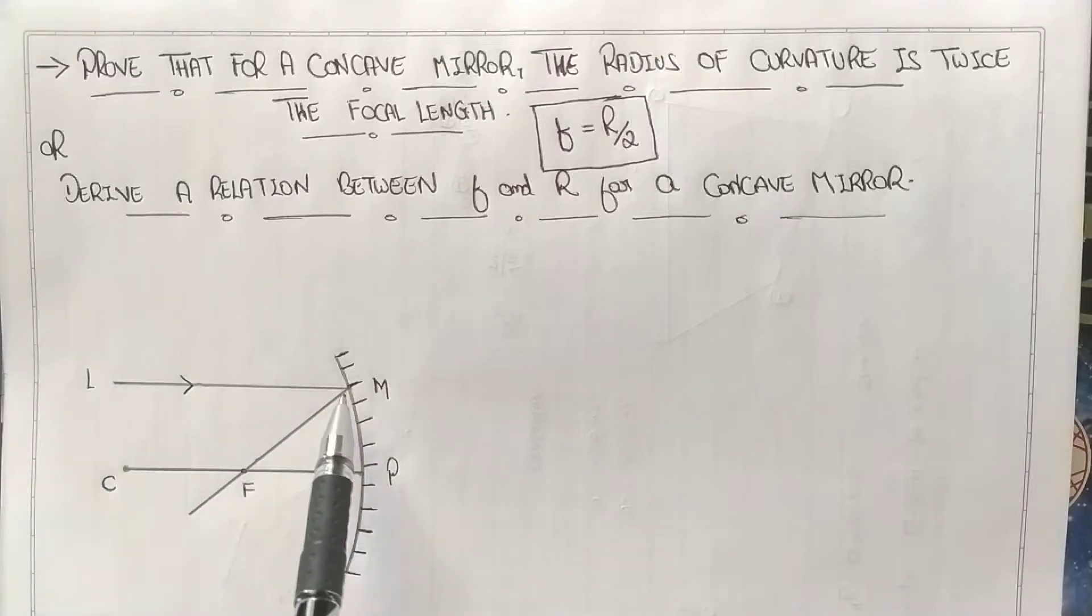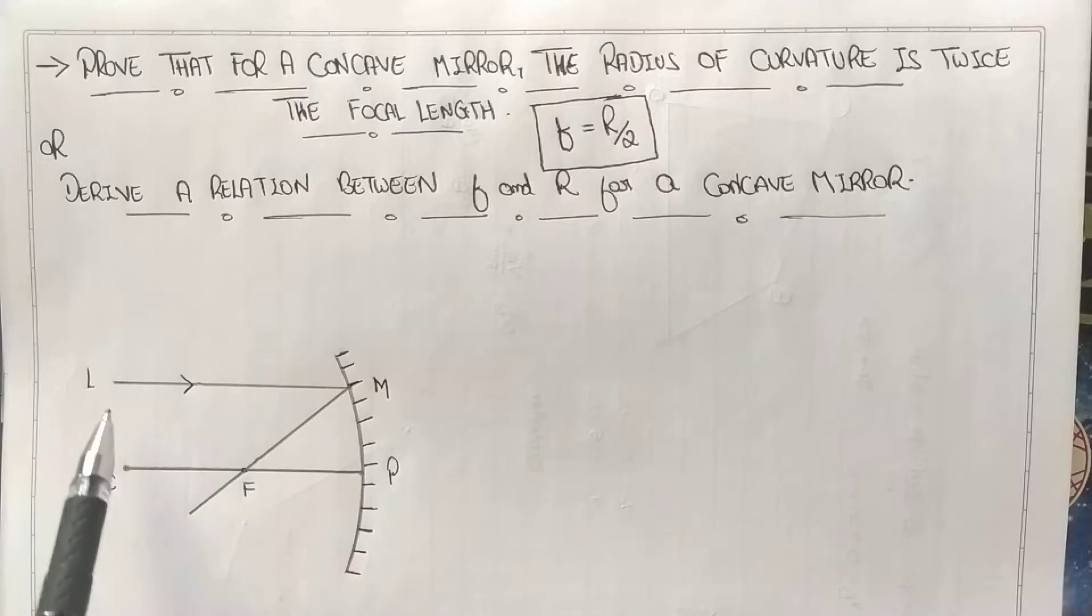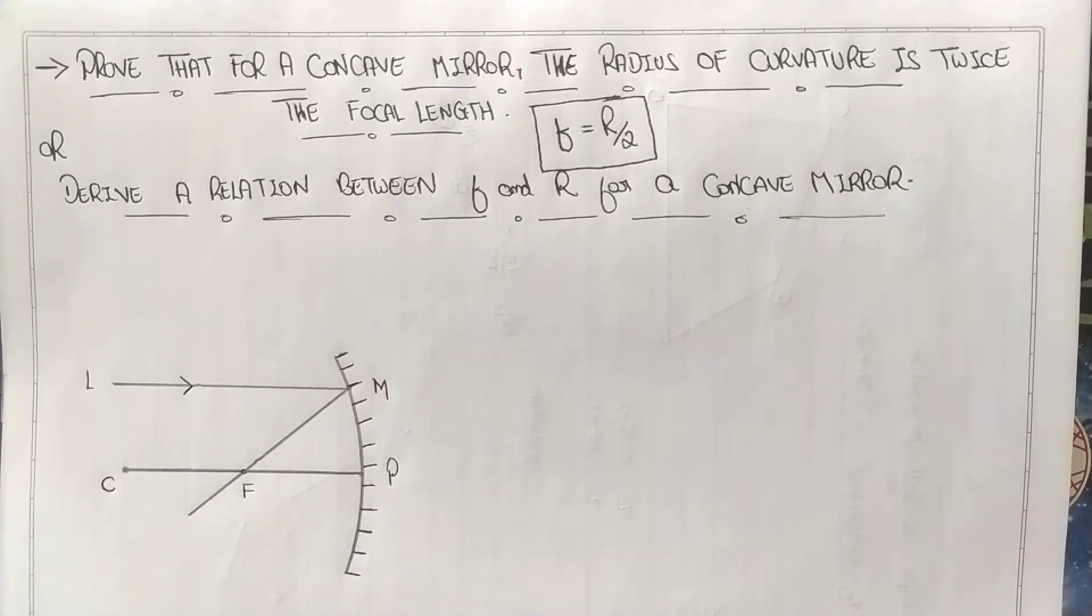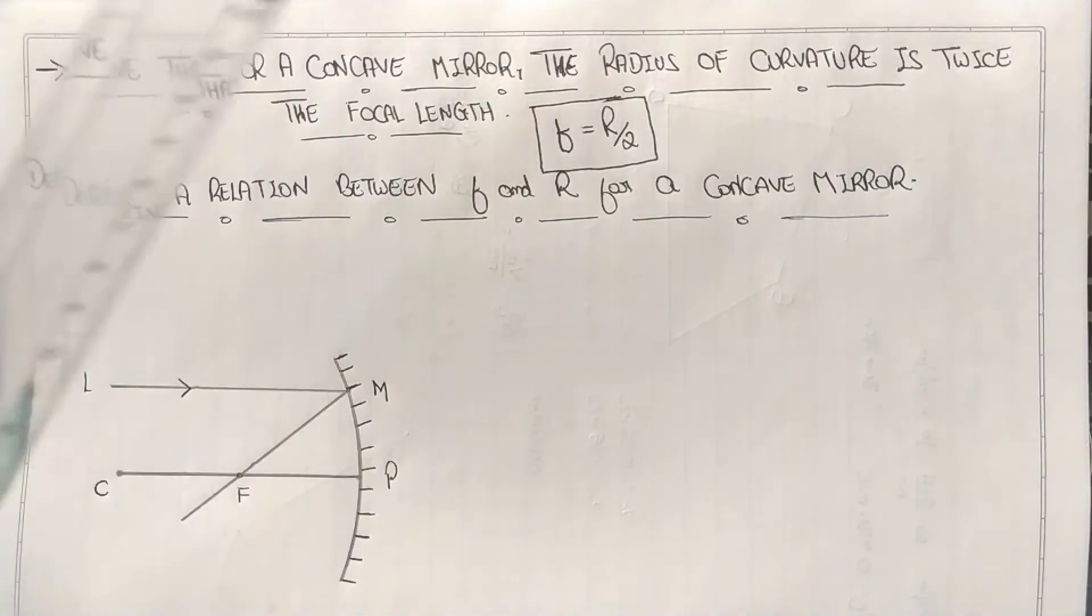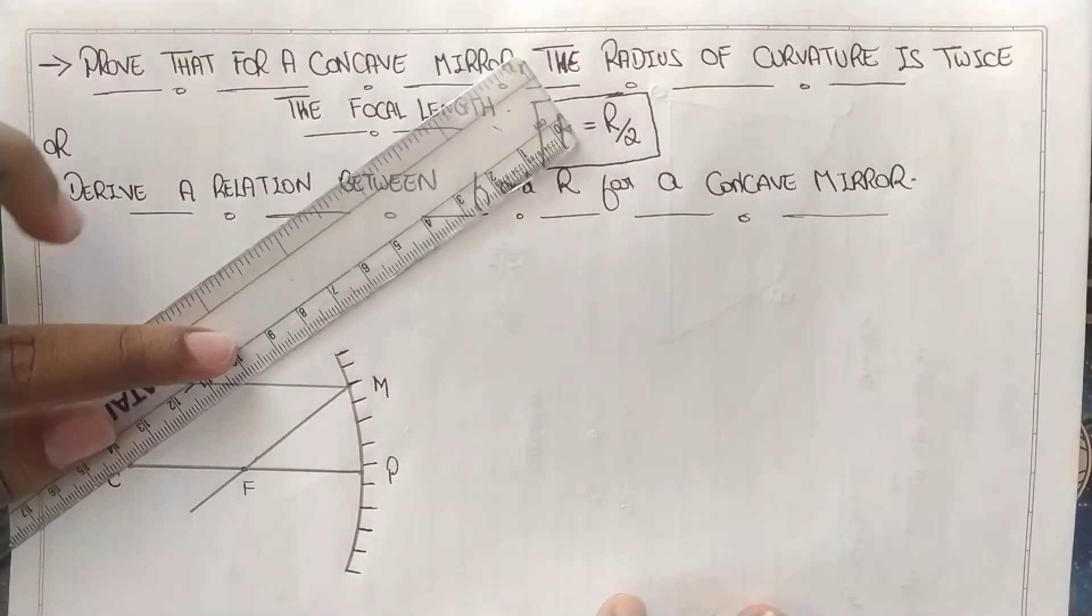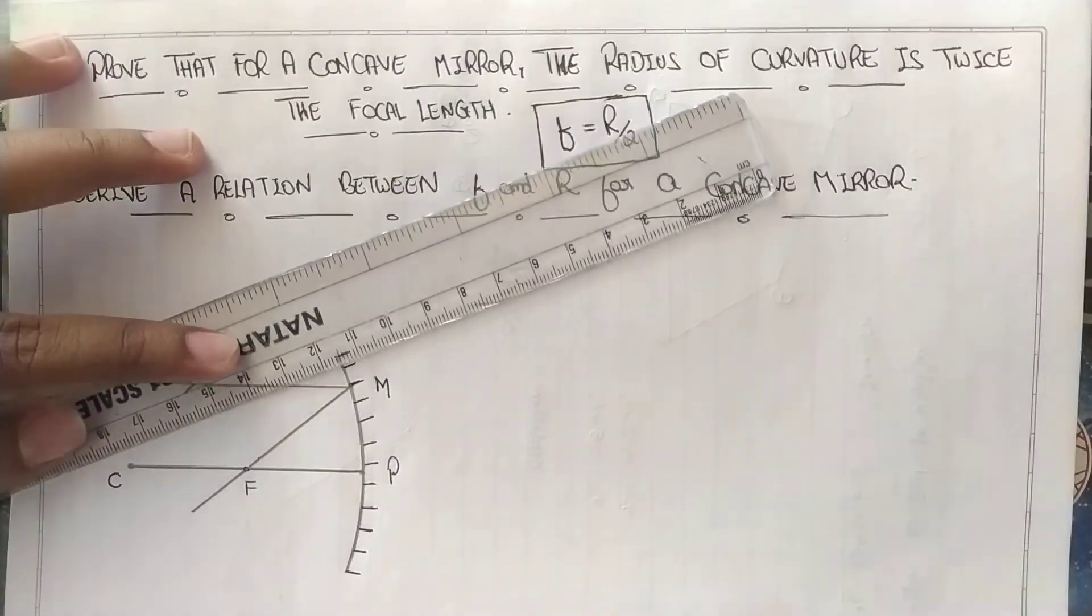LM represents the incident ray on the mirror at point M, which is on the surface. The incident ray is reflected back, passing through the focal length F. C is the center of curvature and CP is the principal axis. LM is the incident ray parallel to the principal axis. For our derivation, let us modify this concept into a mathematical way.